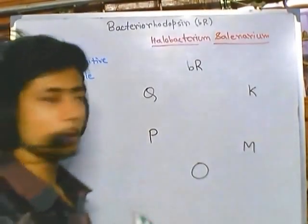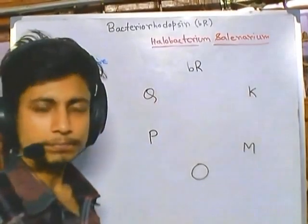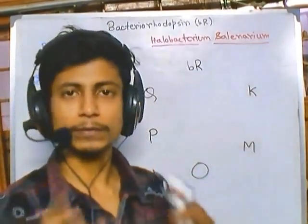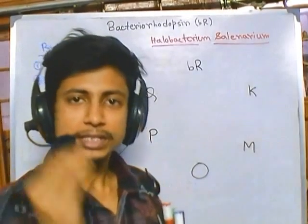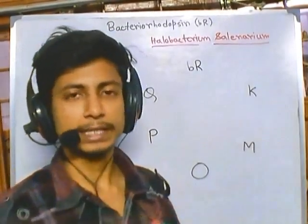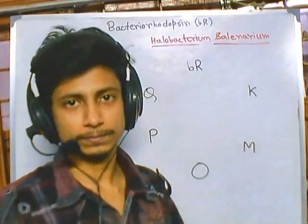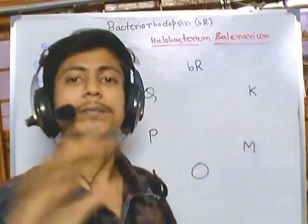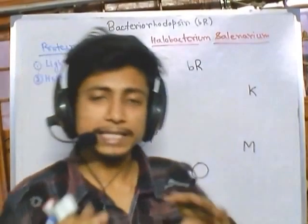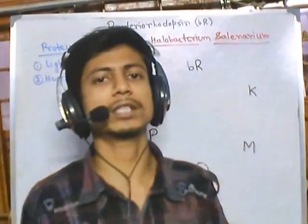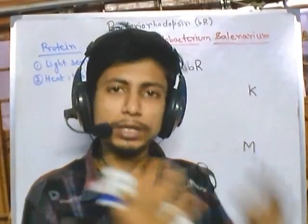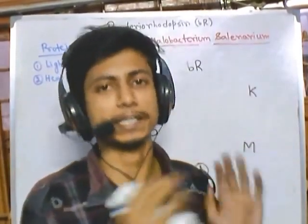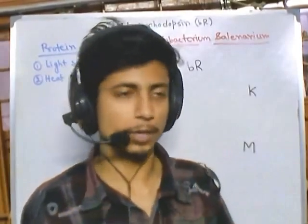The unique property of bacteriorhodopsin is that it is very sensitive to light and the wavelength of light. When it receives a particular light wavelength it changes its structure, and in another wavelength it changes its structure into something else. So it has an array of different structures that are modified depending upon the type of wavelength of light it receives.